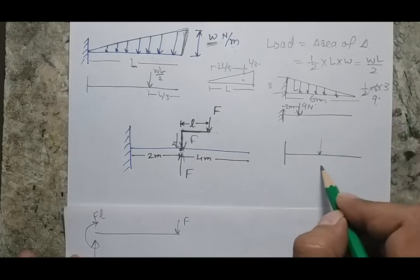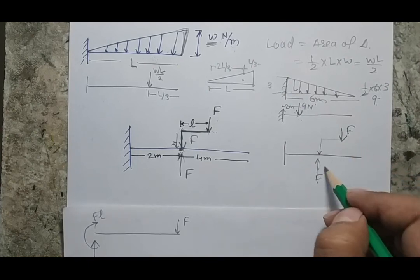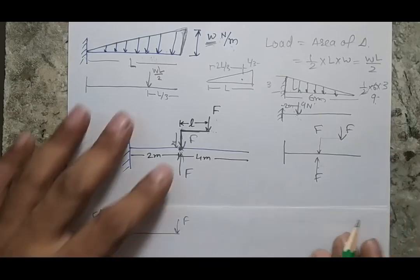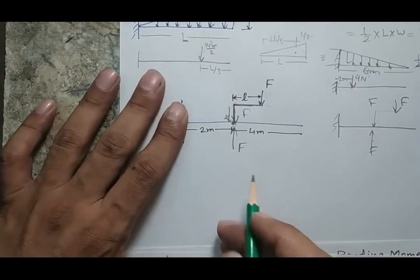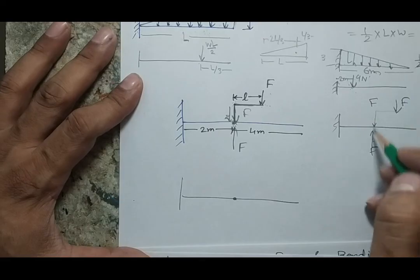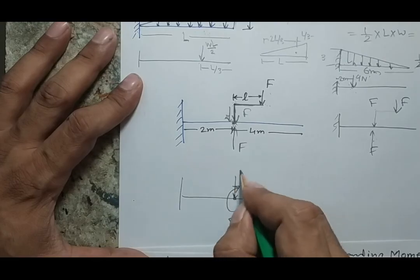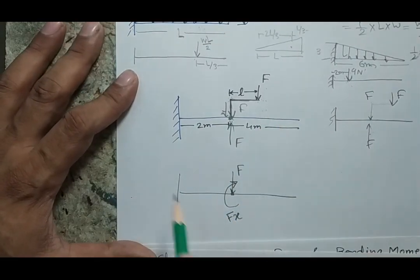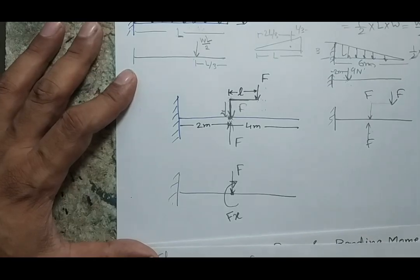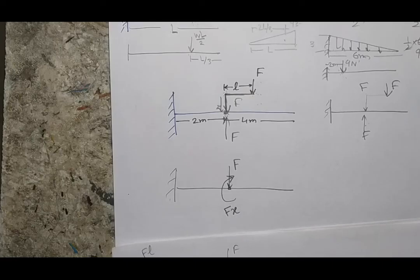The two equal and opposite forces form a couple, and the remaining force F acts directly on the beam. So the equivalent loading at that point is a couple of magnitude F×x plus a force F. This is how such offset loading must be converted before drawing the shear force and bending moment diagram. In this session we have covered different types of loading and beams; in the next lecture we will start shear force and bending moment diagrams for a cantilever beam. Thank you.